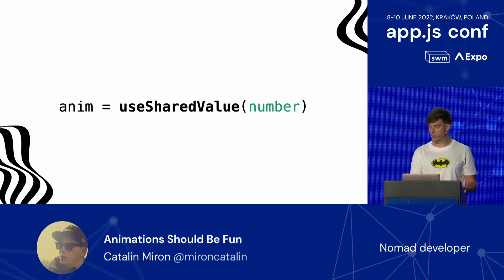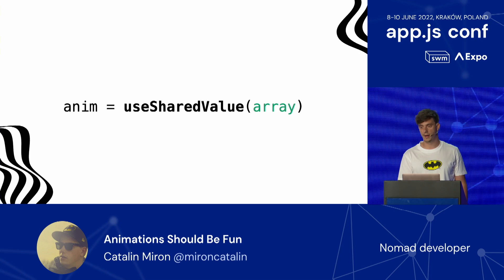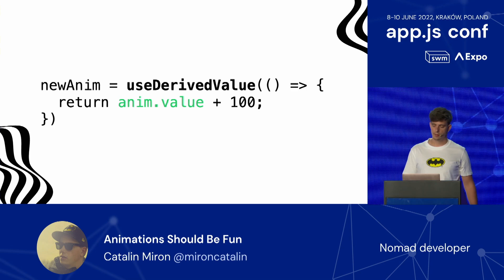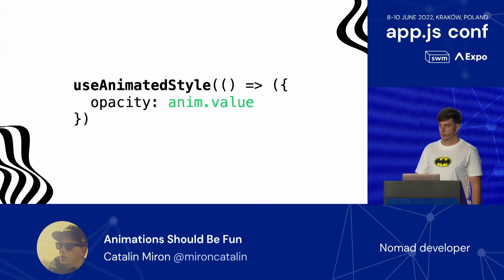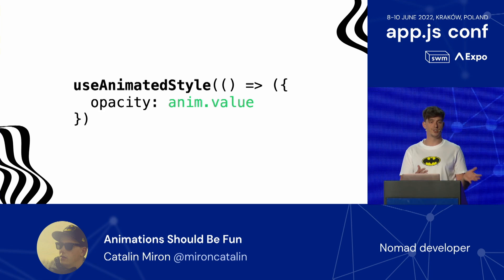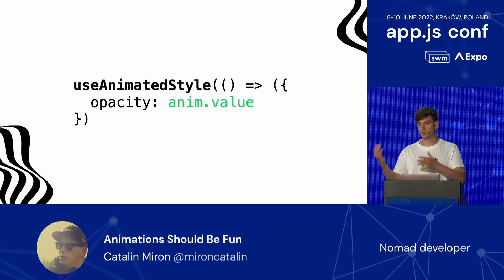A shared value can be a number, a boolean, a string, an object, or an array. The second primitive is useDerivedValue, which creates new values based on a shared value. In this case, I'm just adding 100 to an existing shared value whenever that shared value changes. The next one is useAnimatedStyle. It's used when a style attribute needs to update based on a shared value — in other words, it's a reactive style. In this case, the opacity is going to change based on the shared value.